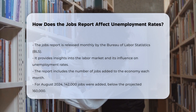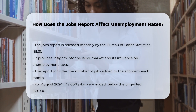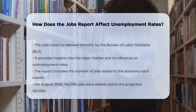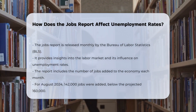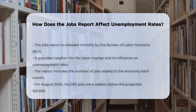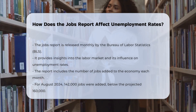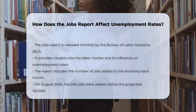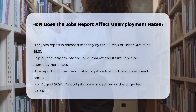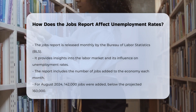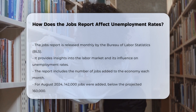Job additions and unemployment rate. The report details the number of jobs added to the economy each month. For example, in August 2024, the economy added 142,000 jobs, which was below the projected 160,000 jobs. This figure influences the unemployment rate, which is the percentage of the labor force that is currently unemployed. In August, the unemployment rate dipped to 4.2% from 4.3% in July.